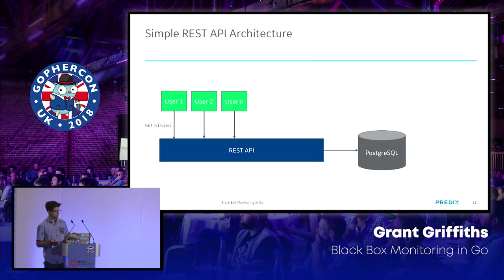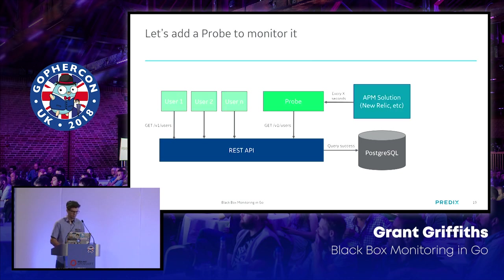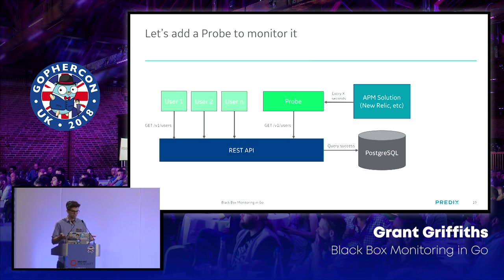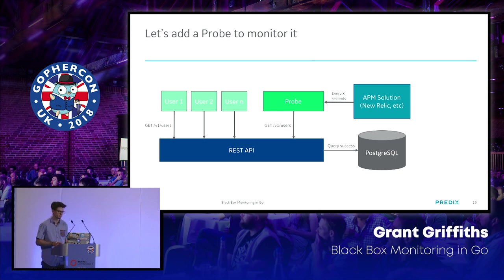Let's introduce a simple REST API architecture. Say we have end users hitting our REST API with a simple GET users endpoint backed by Postgres. Now add a probe to monitor it — think of the probe as an extra user constantly using your service every however many seconds makes sense for your business case. You can have an APM solution like New Relic or AppDynamics constantly checking the probe. The frequency depends on cost: creating a dedicated cluster every few seconds would be very costly, but hitting a query endpoint can be done much more frequently.